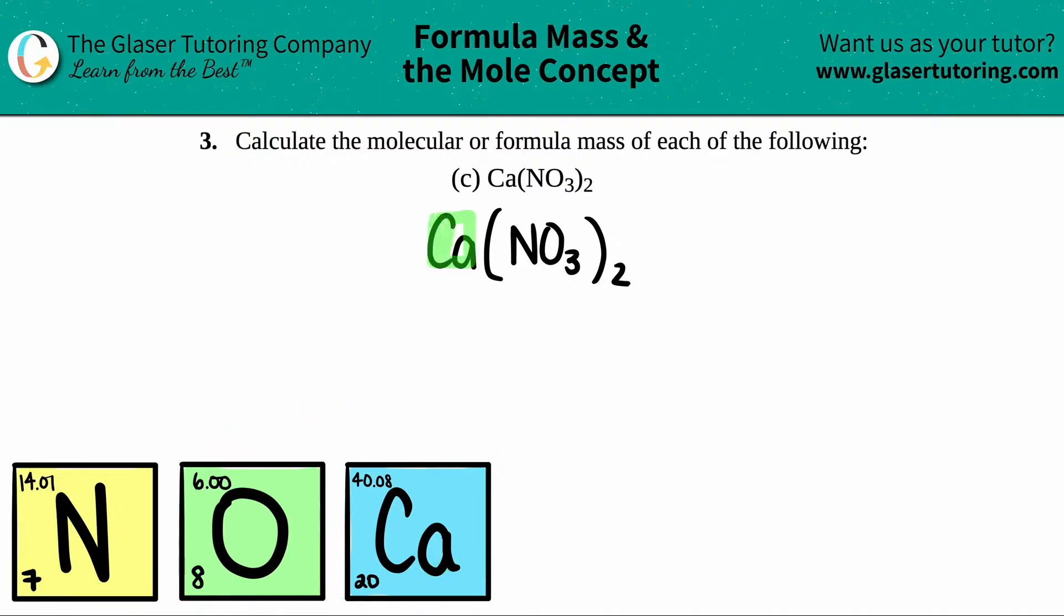I have calcium, Ca, I have nitrogen, which is N, and then I have oxygen, which is O. So I'm just going to write those down. I'm going to list them out. So I have Ca, N, and O.